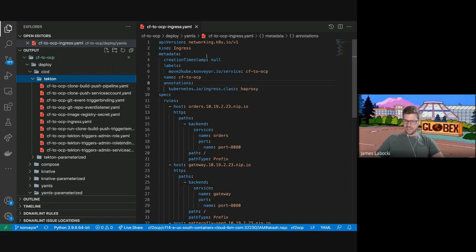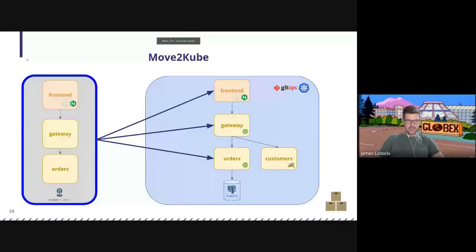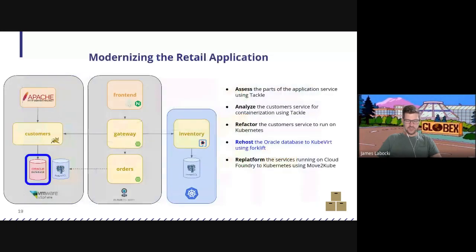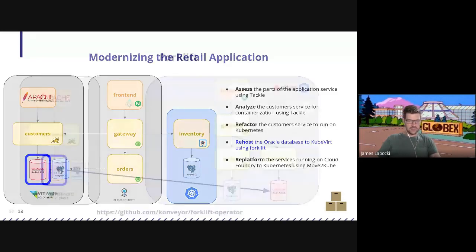This is really helpful to see how we could use Move to Kube to move our Spring Boot applications over. So just to reiterate where we're at — we just moved all of our Spring Boot apps over to Kubernetes. So now I have my front end, my gateway, my order service, and my customer service all running on Kubernetes. But I do have a question — we kind of forgot about that database with the customer service. So how am I going to move that over? Miguel, you had mentioned moving that over with Forklift — is that something we can talk through now?